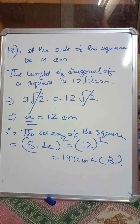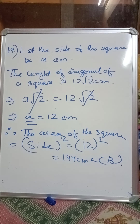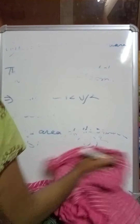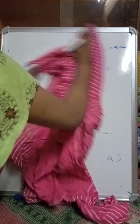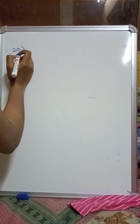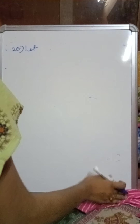Now we will solve sum number 20. If the area of a square is A1 square units and the area of the square drawn on the diagonal of that square is A2 units, then the ratio of A1 to A2 is — please check the question number in your book while you are doing the sum with me.